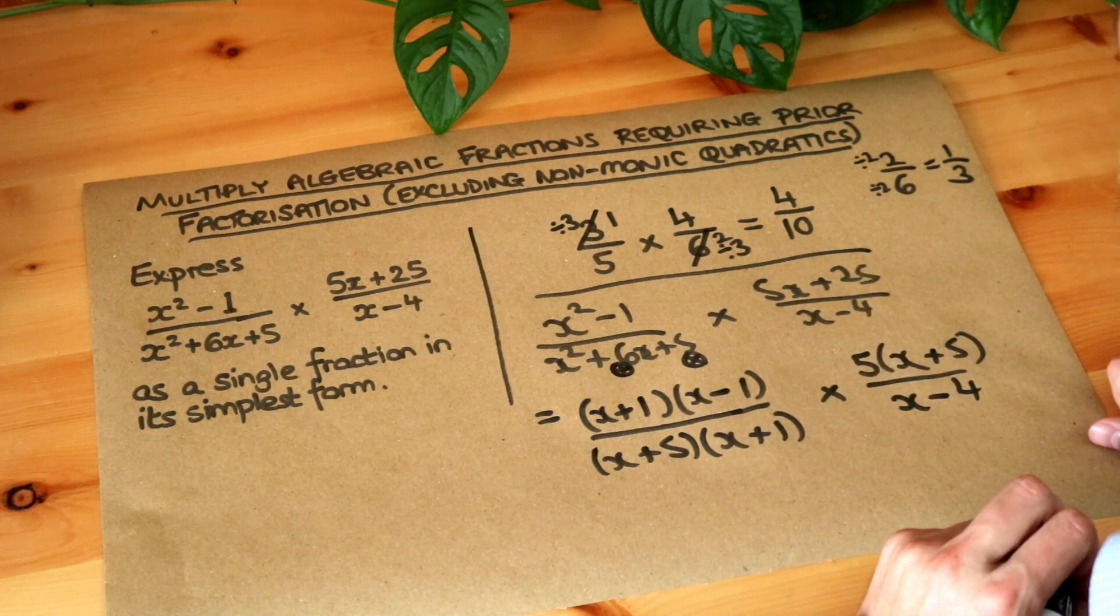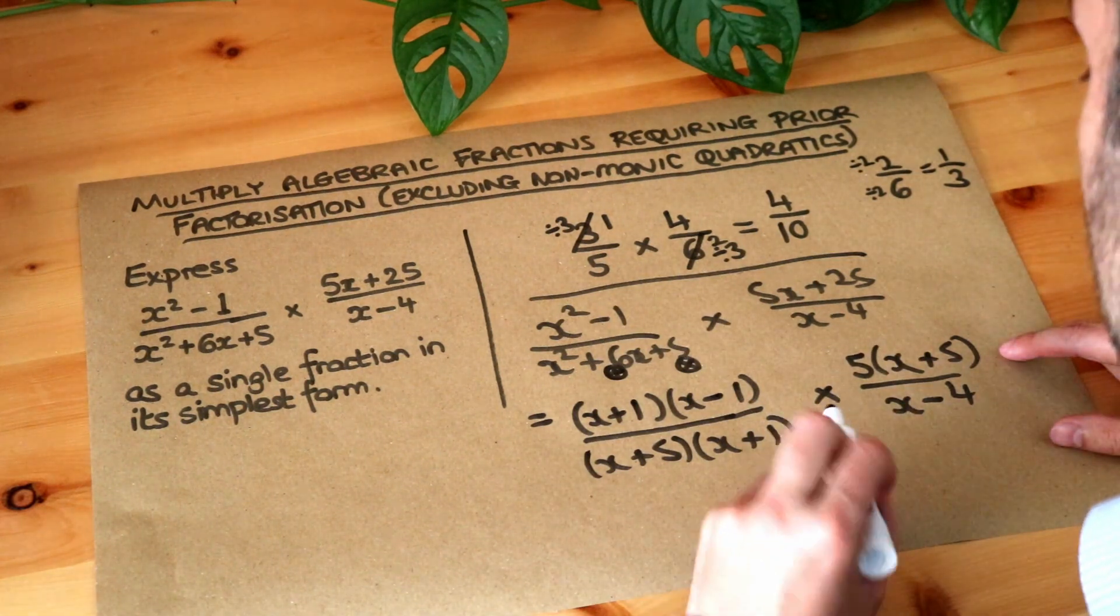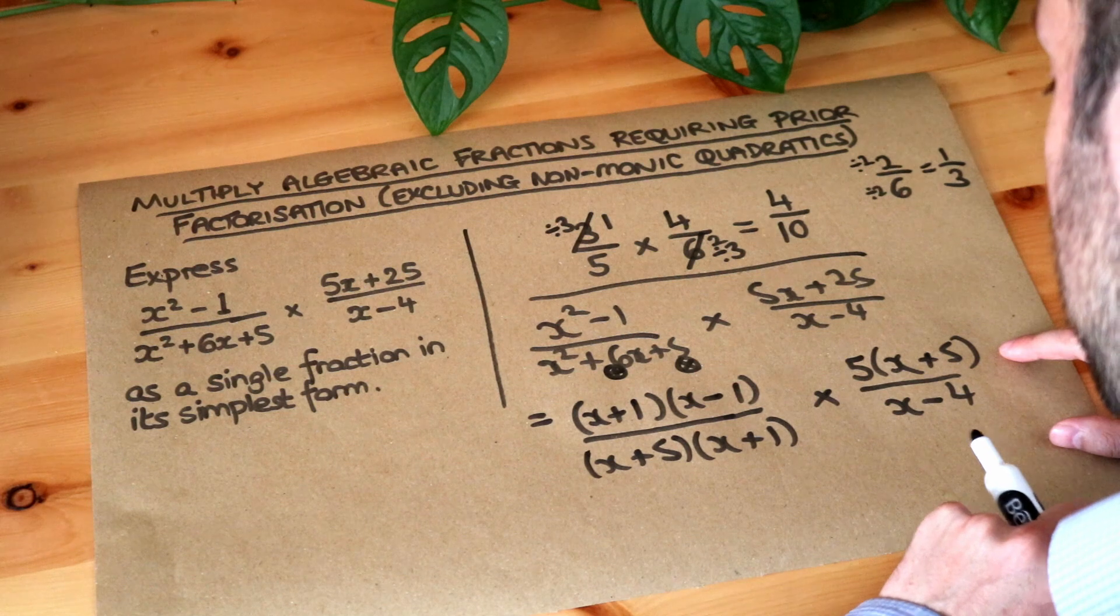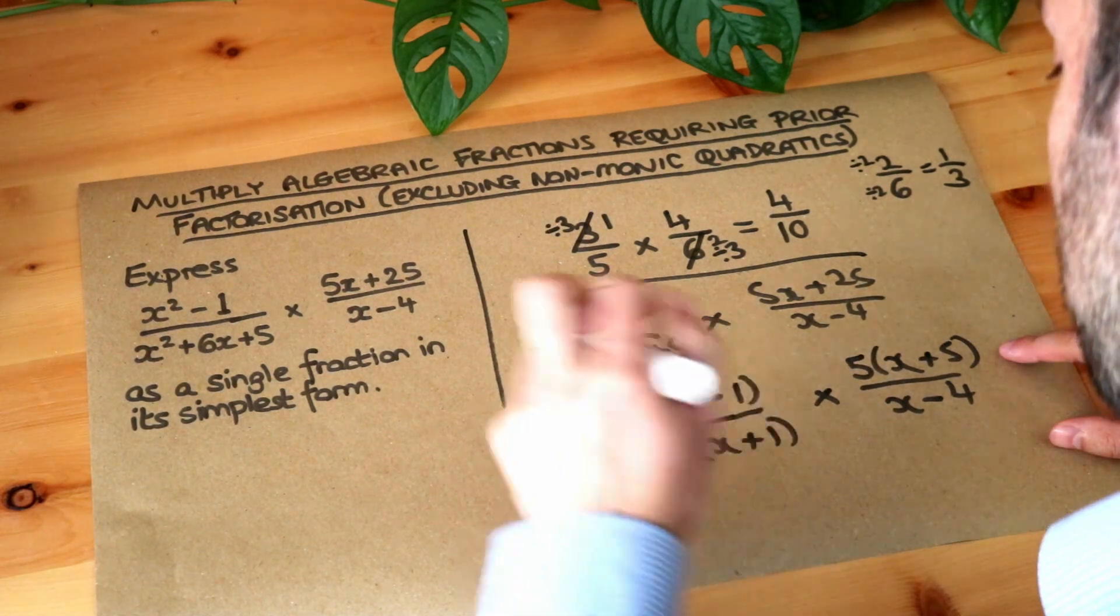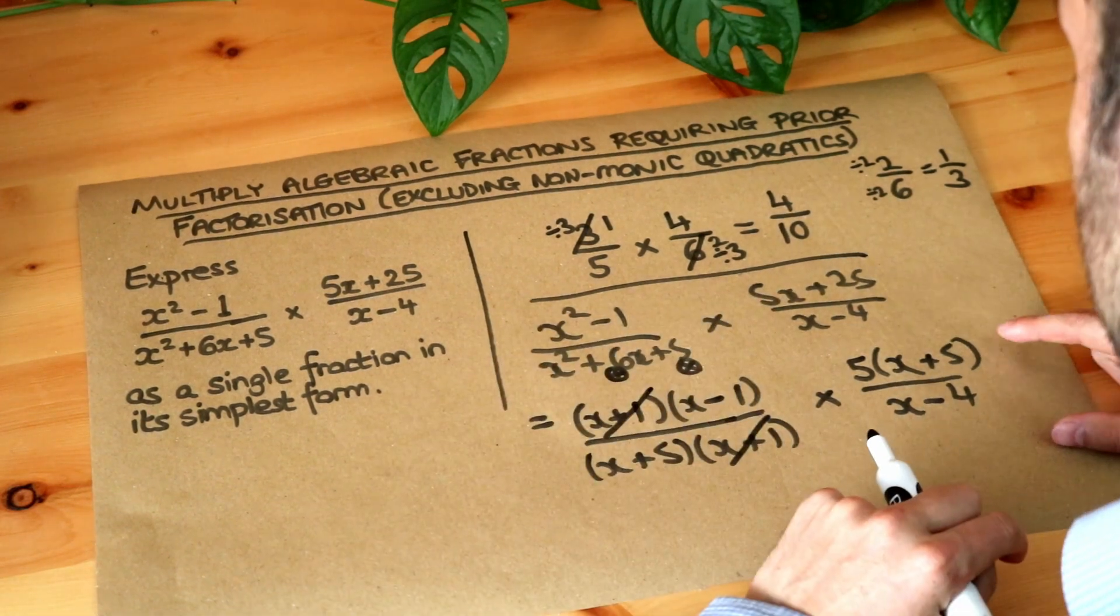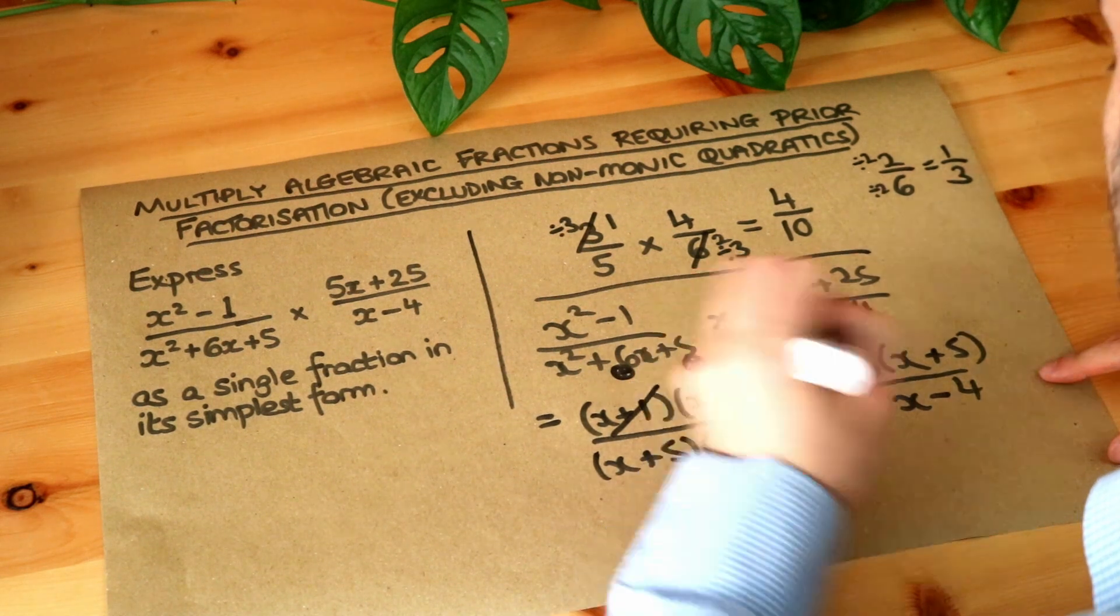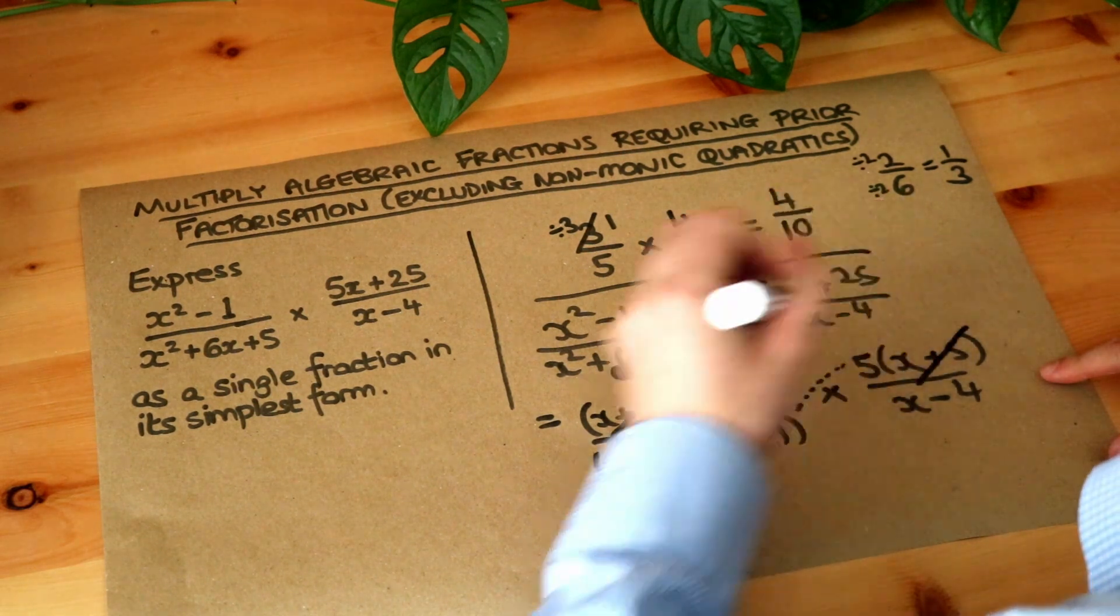And now we can do what we did up here. We can cross-cancel. Is there anything top and bottom or diagonally top and bottom we can cancel? Well, I can see top and bottom here, I've got an x plus 1 and x plus 1. So I can divide top and bottom of this particular fraction by x plus 1. But can you also see that diagonally, top and bottom, I've got an x plus 5 and an x plus 5 here. So I can divide by those.